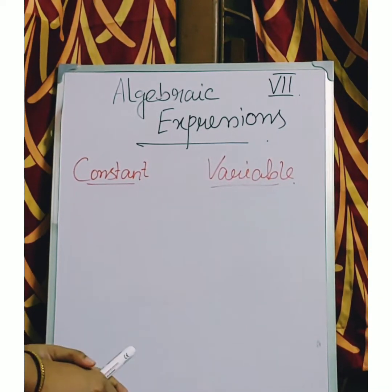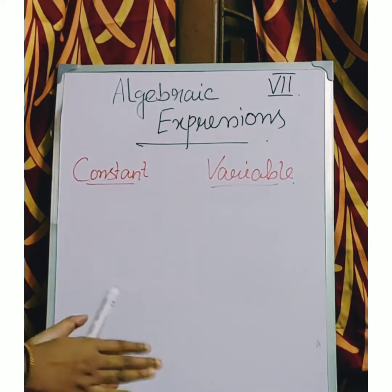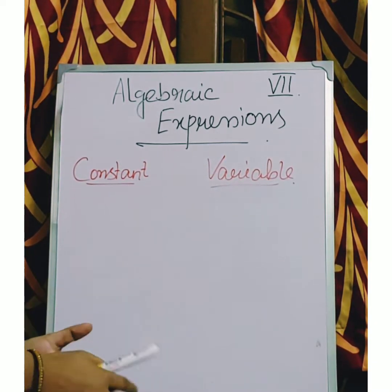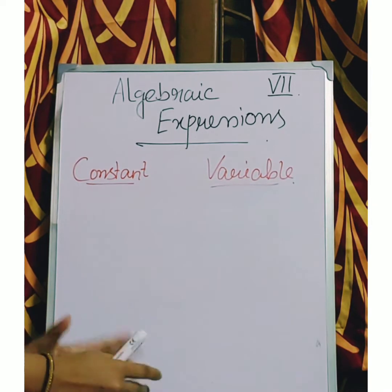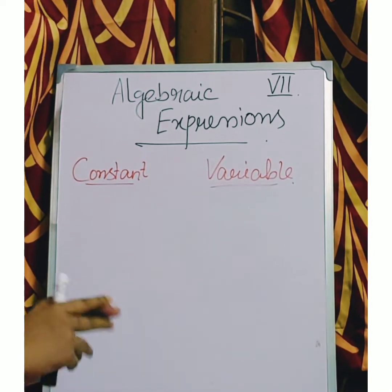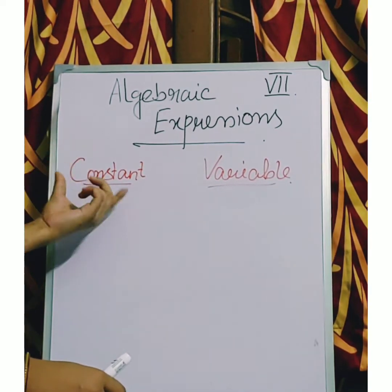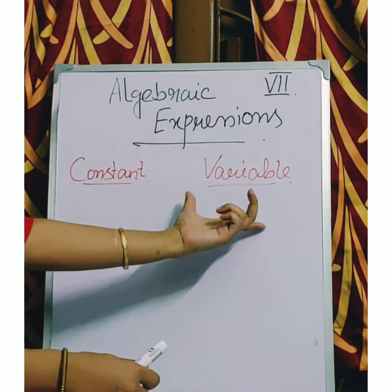So let us start. First, what is algebraic expression? To know what is algebraic expression, two things we have to understand very clearly. In algebra we have to be accustomed with two terms: one is constant and one is variable.